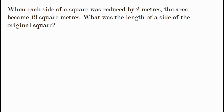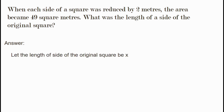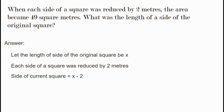So we will let the original side length of the square be x. The reduced side becomes x minus 2, and the area of the new square is 49 square meters.